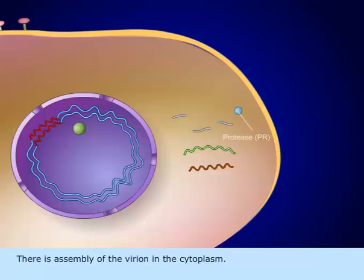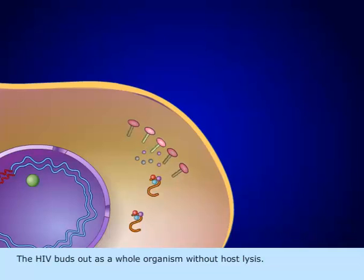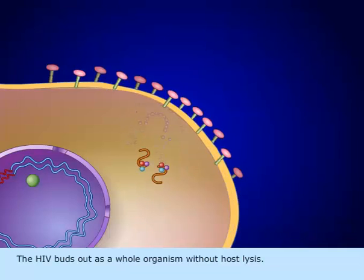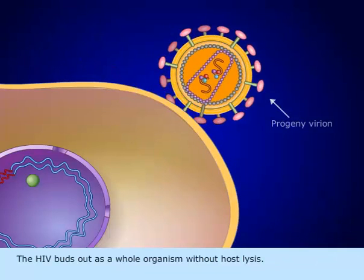There is assembly of the virion in the cytoplasm. The HIV buds out as a whole organism without host lysis.